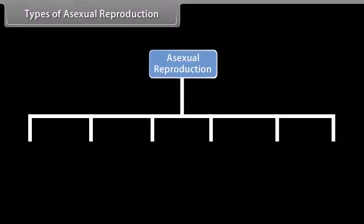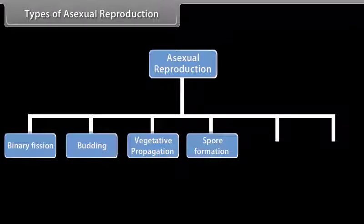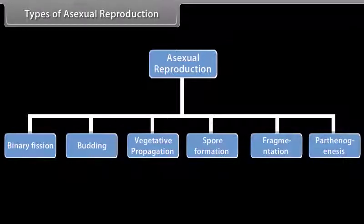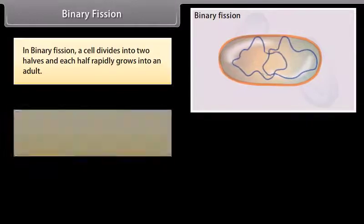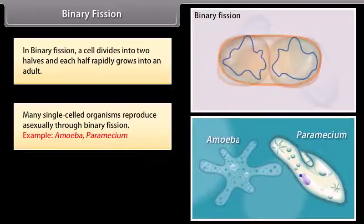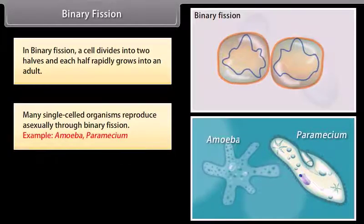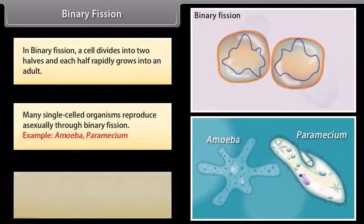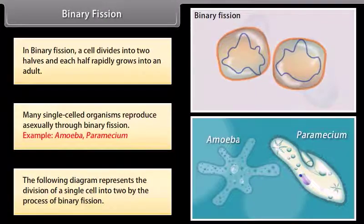An organism may reproduce asexually by binary fission. In binary fission, a cell divides into two halves and each half rapidly grows into an adult. Many single-celled organisms reproduce asexually through binary fission. Examples include amoeba and paramecium. The following diagram represents the division of a single cell into two by the process of binary fission.